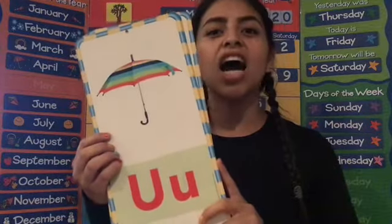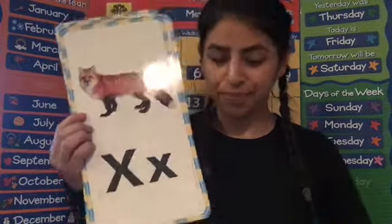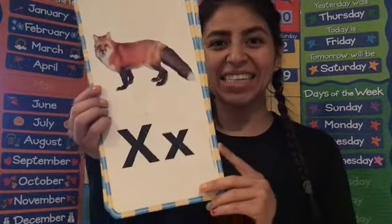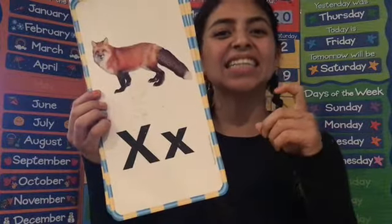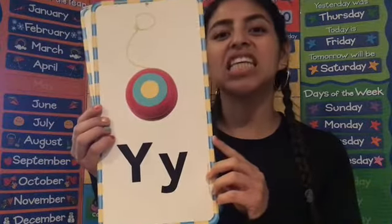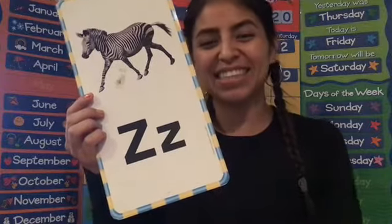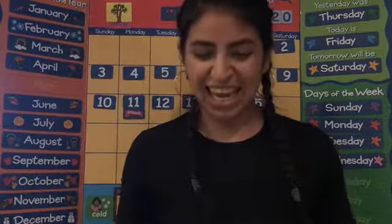U says, uh. V says, vvv. W says, wuh, wuh. X says, ks, ks. Y says, yuh. And last but not least, Z says, zzz. Good job, TK.